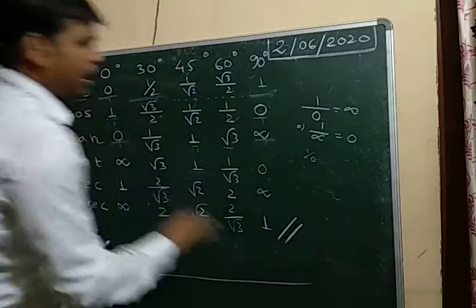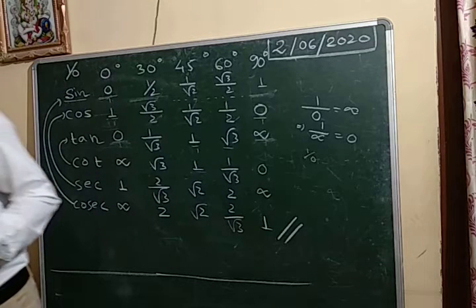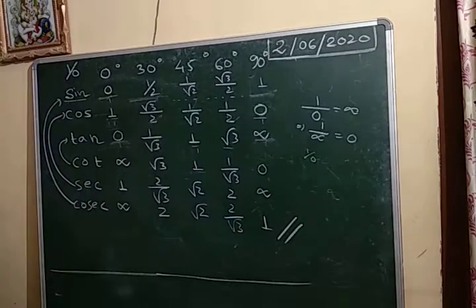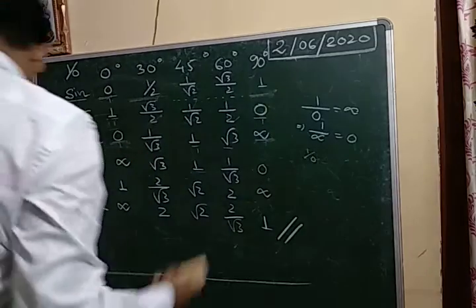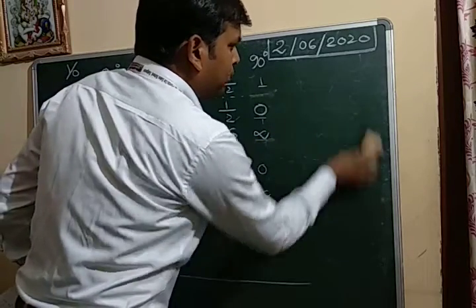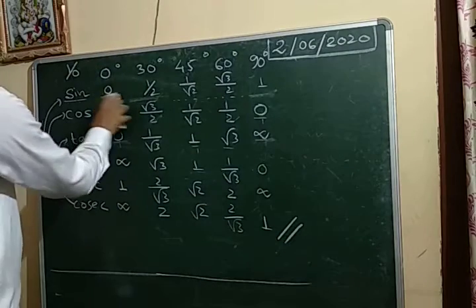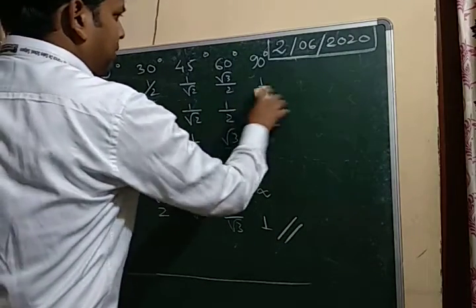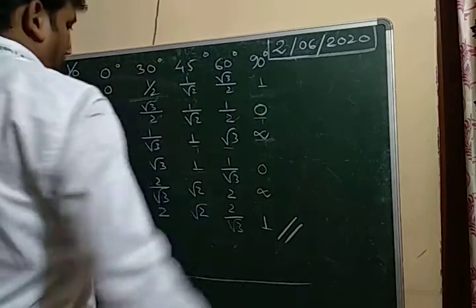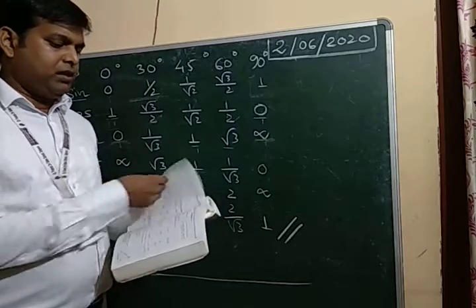This is the way to remember the table. You have to write this table one or two times by your own. After that we can do the sums very easily. But before that we have to remember this table. I hope you understand how to remember this table. So now we are moving to the application part — how to use this table. Exercise 8.2.